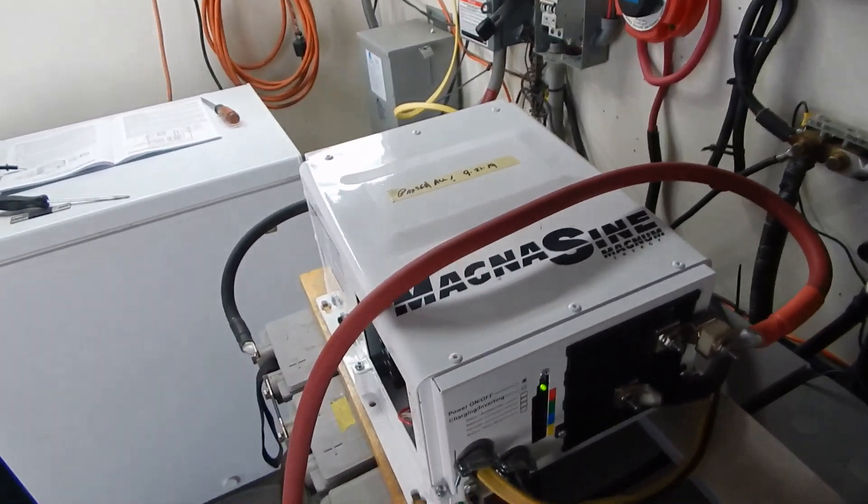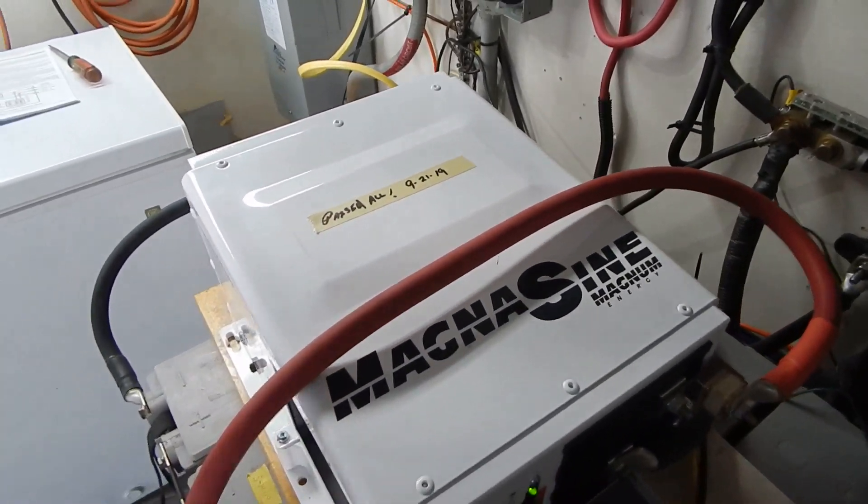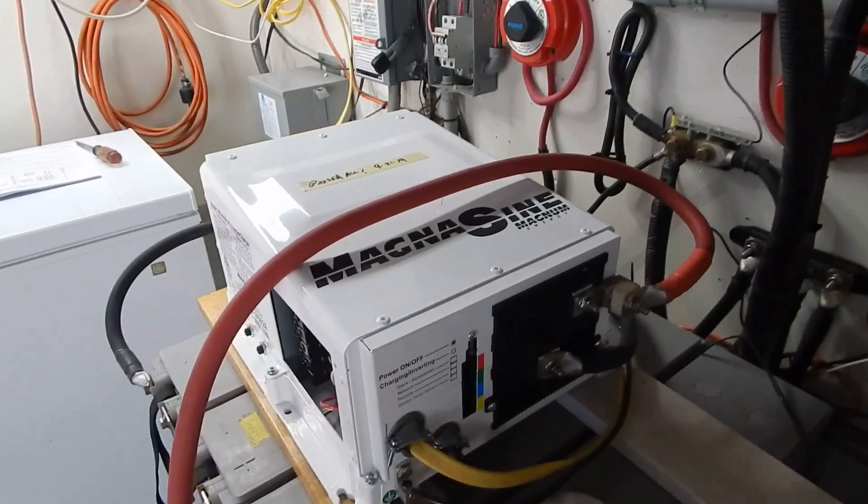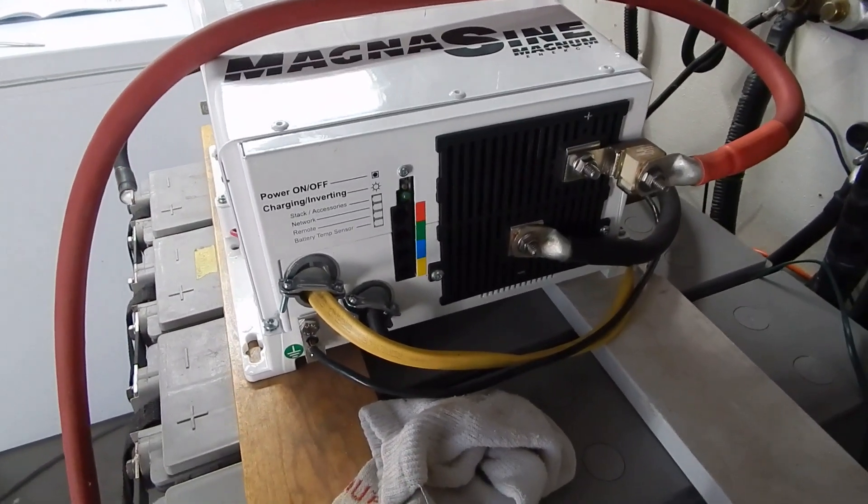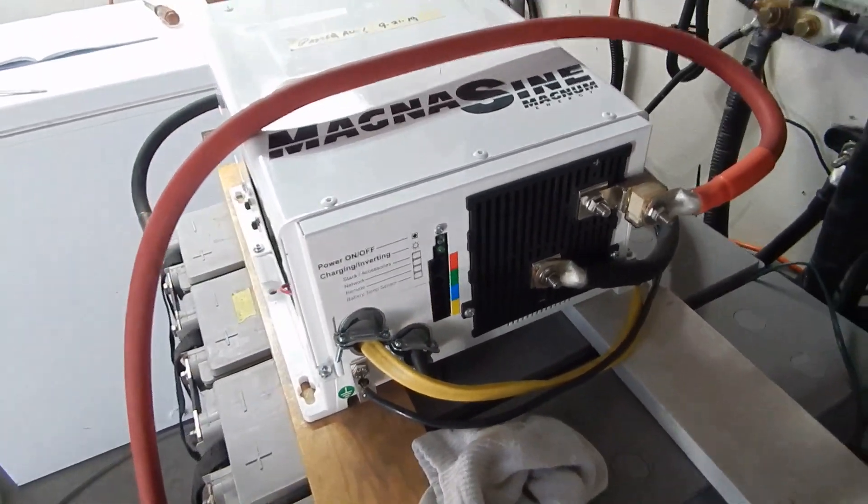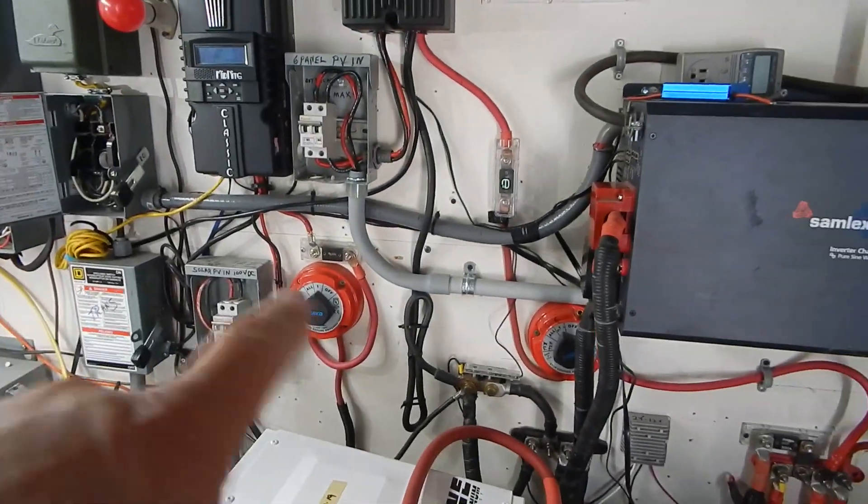So that's the update. I do have the Magnum Sine 4448, 120-240 inverter. Works great. See the little green button, green light back here blinking? I've got all the rest of the stuff to put in here, but I won't do that till I do the panel. And then I'll take all this stuff on the wall down.